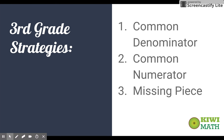Let's quickly review what the third grade strategies are. The first strategy was common denominator — how to compare when two fractions have the same denominator. The second was common numerator — how to compare when two fractions have the same numerator. And the third was missing piece — how to compare when two fractions are each missing one piece to get to a whole.